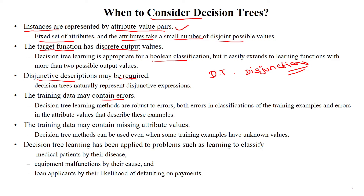The decision tree also handles missing values in samples. It can be applied to problems such as classification — for example, medical patient disease classification, equipment malfunction detection, and banking sector applications. Thank you.